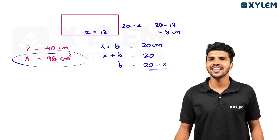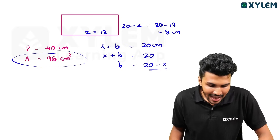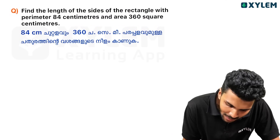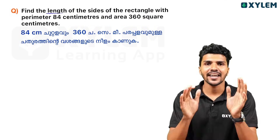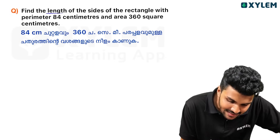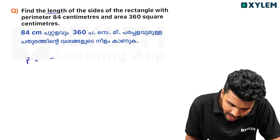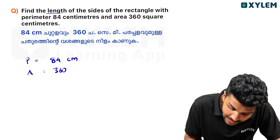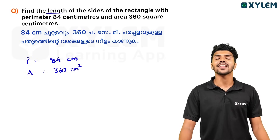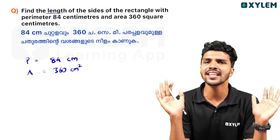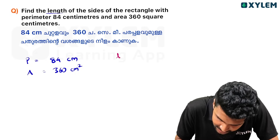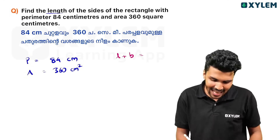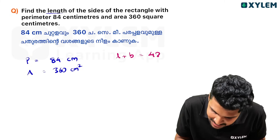Now here is a practice question for you. A rectangle has a perimeter of 84 cm and an area of 360 cm². Since the perimeter is 84 cm, length plus breadth equals 42 cm. Let length equal X, so breadth equals 42 minus X.